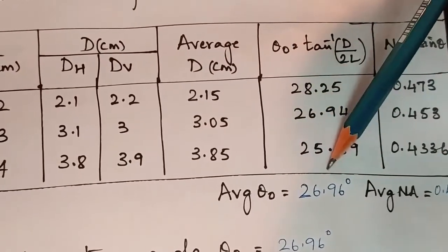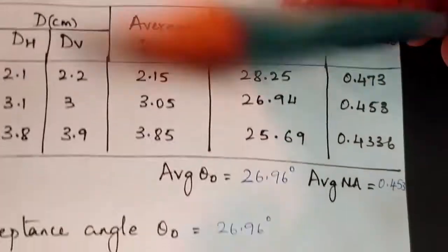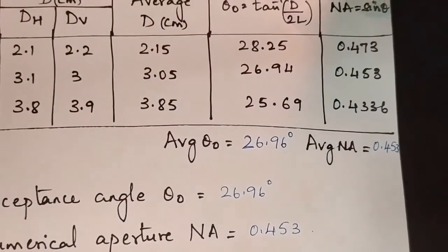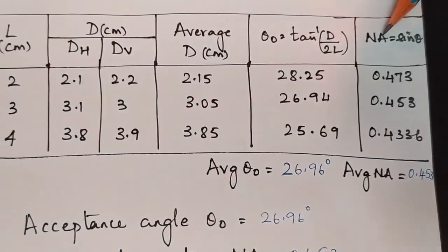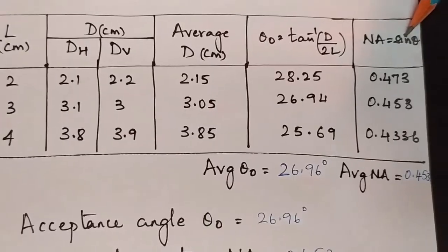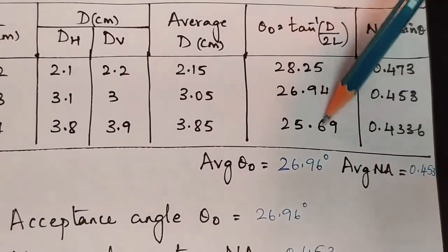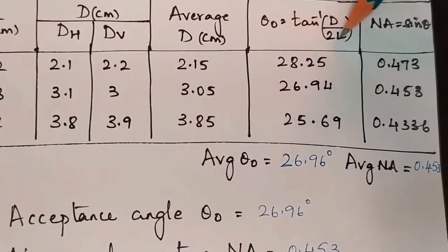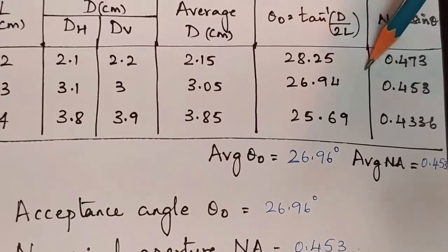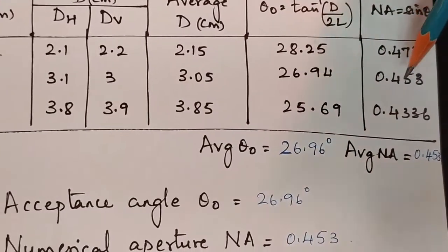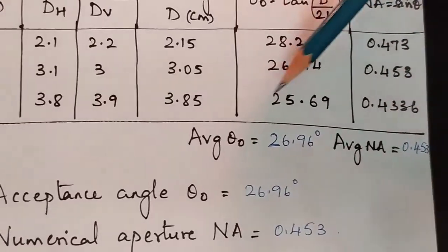The same procedure is repeated for different distances. We know the relation between numerical aperture and acceptance angle: numerical aperture equals sine of acceptance angle. So as we have calculated the acceptance angle for various distances, we have calculated the numerical aperture also.